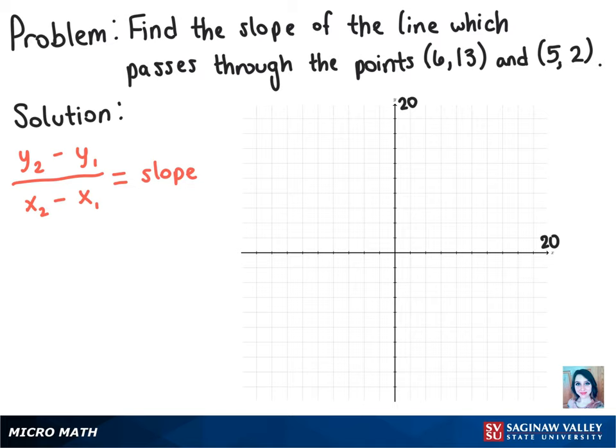To find the slope of the line which passes through the points (6,13) and (5,2), we're going to use this formula in red.